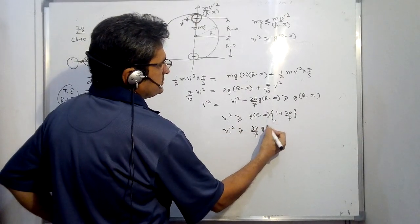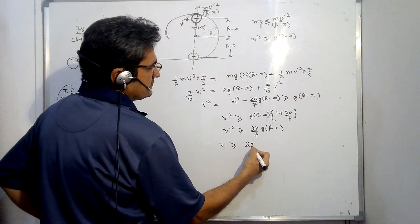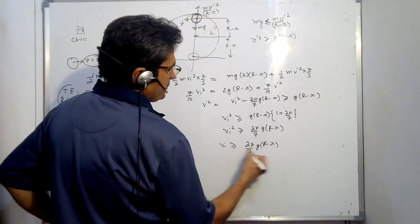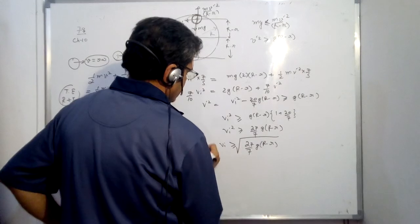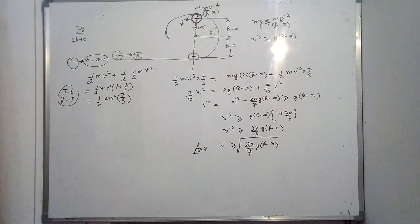G(R minus r). So V_I has to be greater than equal to square root of 27 upon 7 G(R minus r). This is the answer for it to roll through without falling in between.